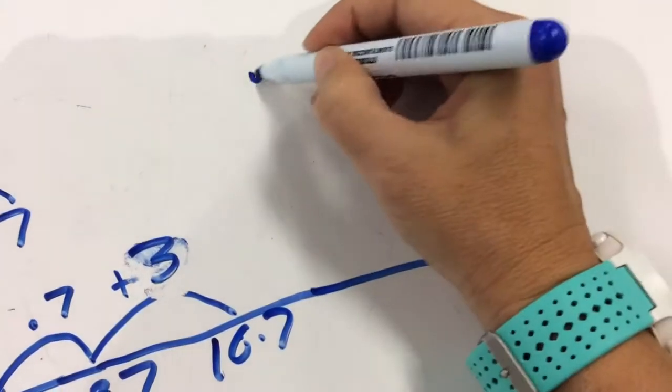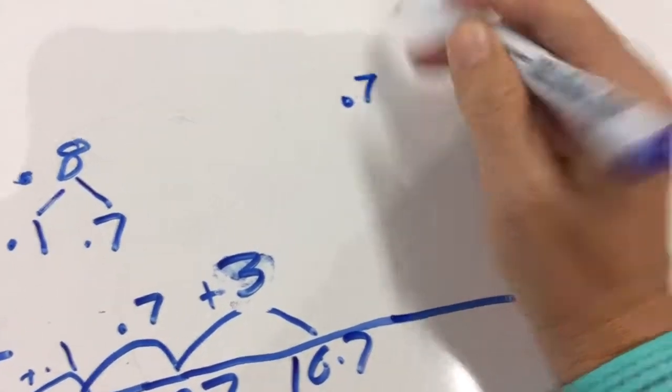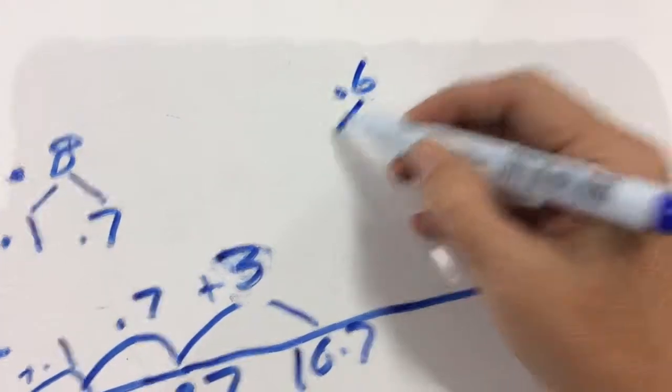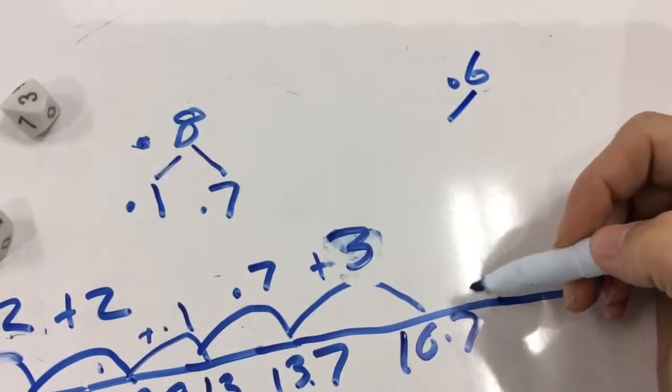And then it gets me to 16.7. And then now again, I have 0.7, or sorry, 0.6 from my 3.6. And I want to look at how I can break that down to get to that next whole number.